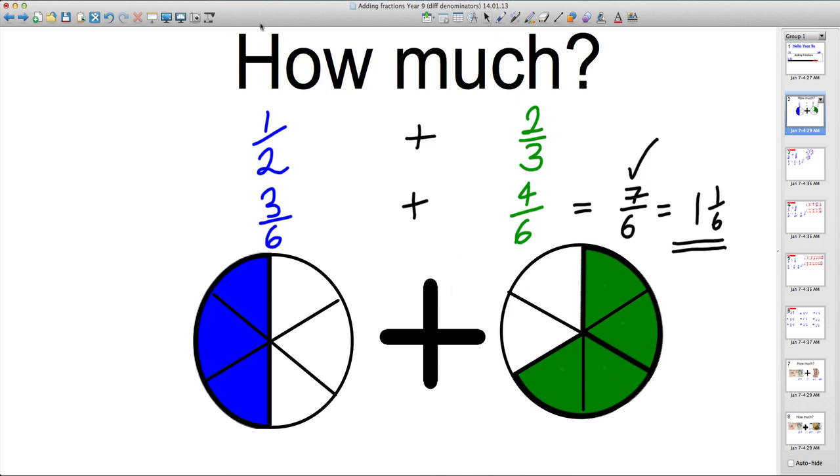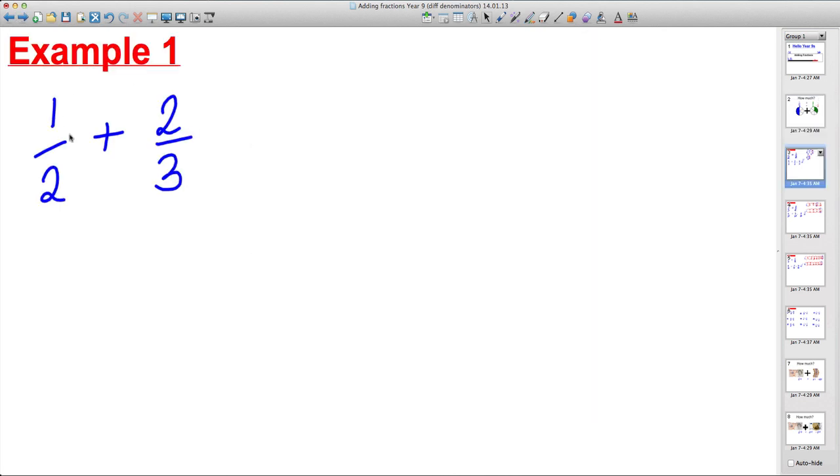So let's do 3 examples then I want you to do a set of questions. Here's question 1, Example 1: 1 half plus 2 thirds. The first thing we do is we take this number 1 half. We can't add these because the numbers on the bottom are the same. 1 lot of 1 half plus 2 lots of 1 third. We need to make the number at the bottom the same.